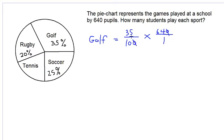We cancel a 0. 5 into 35 is 7, 5 into 10 is 2. 2 into 2 is 1, 2 into 6 is 3, 2 into 4 is 2. Multiply 32 by 7. 7 times 2 is 14, 7 times 3 is 21 and 1 is 22. So we have 224 students playing golf.